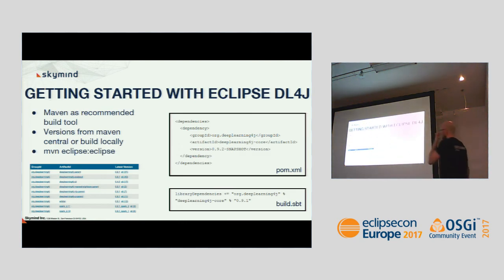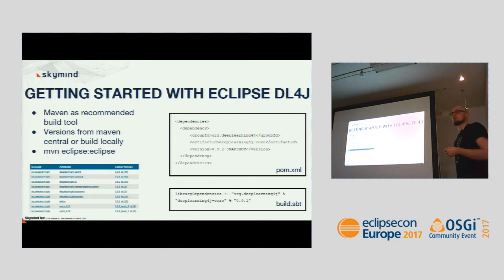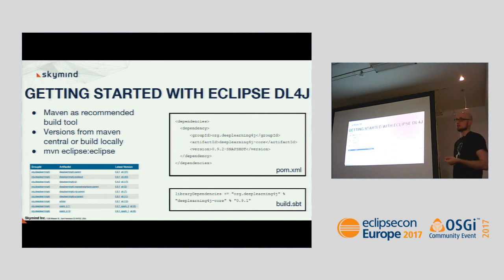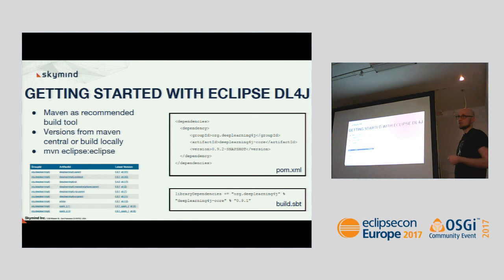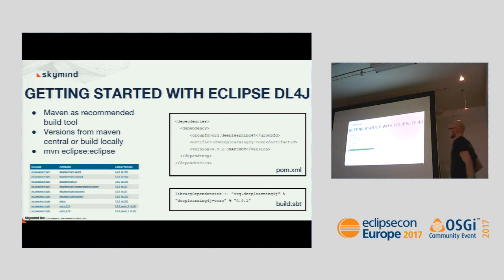If you want to get started with Deep Learning 4J, we usually recommend Maven as the build tool, but you can use Gradle, Ivy, or whatever you like. You can get our libraries from Maven Central or build locally. I've shown the dependencies you can add for our latest nightly snapshot versions in your pom.xml, or if you prefer SBT, here's an example loading version 0.9.1, the latest stable version.